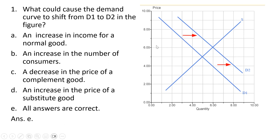An increase in income for a normal good shifts the demand curve to the right. If there's an increase in the population or the number of consumers, demand shifts right. A decrease in the price of a complement good — so if the price of hot dogs falls, the demand for hot dog buns shifts right. An increase in the price of a substitute good — if the price of beef increases, the demand for chicken shifts right. So all answers are correct.